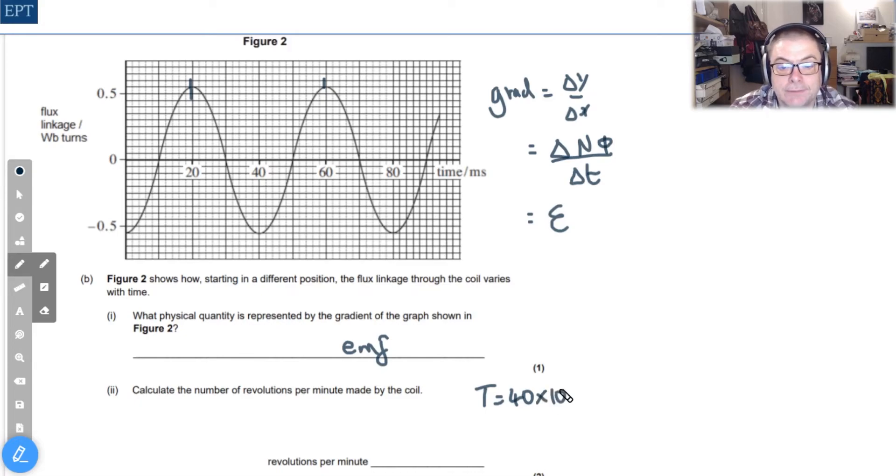Don't forget the milliseconds - lots of my students do. This means that the number of rotations in one minute is going to be 60 divided by the time for 1 which is 40 × 10^-3, which comes out as 1500 turns in a minute.